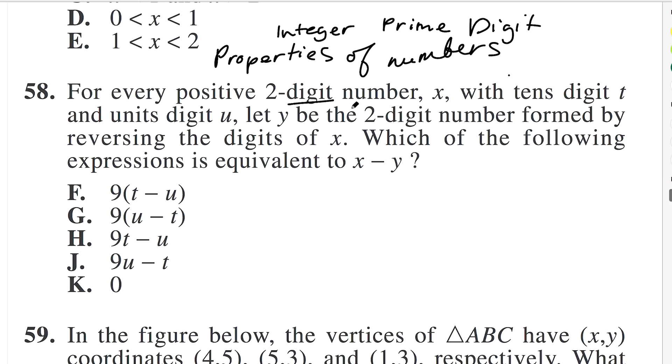For every positive two-digit number x with tens digit t and units digit u, let y be the two-digit number formed by reversing the digits of x. So let's just wrap our brains around that. What that means is we have a two-digit number x, and x looks like this. It's t then u. Then we have a digit y and it's the two-digit number formed by reversing the digits. So that's u then t. This is tens and ones.